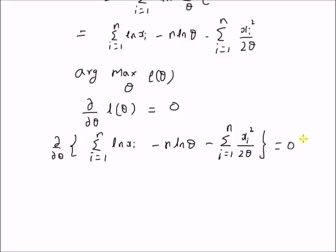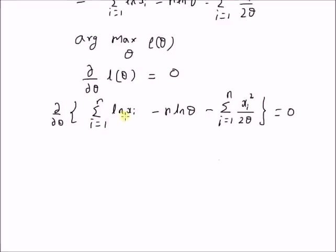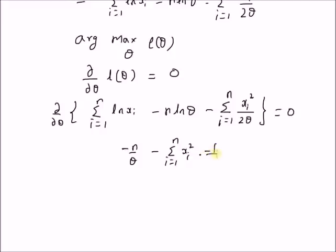Setting the derivative of this function to 0: since the first term is independent of theta, its derivative is 0. For the log theta term, the derivative is minus n by theta. For the last term, the derivative is minus of the summation from i equal to 1 to n of xi squared, multiplied by minus 1 over theta squared times 1 over 2. This is equal to 0.